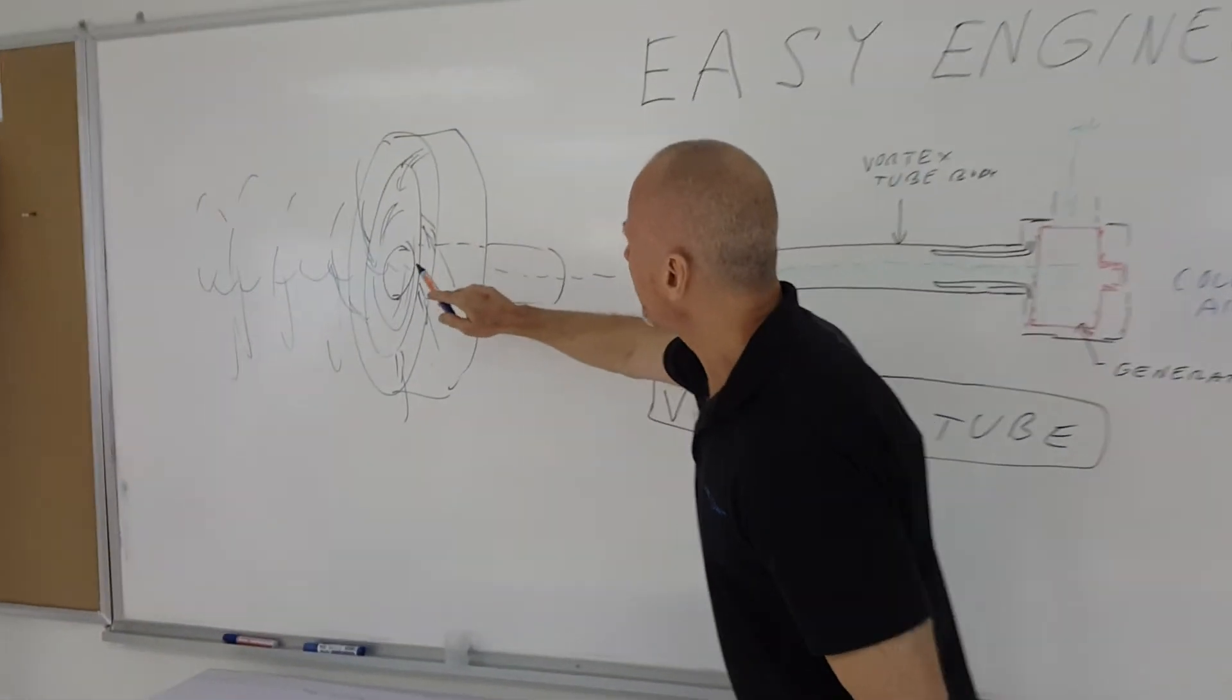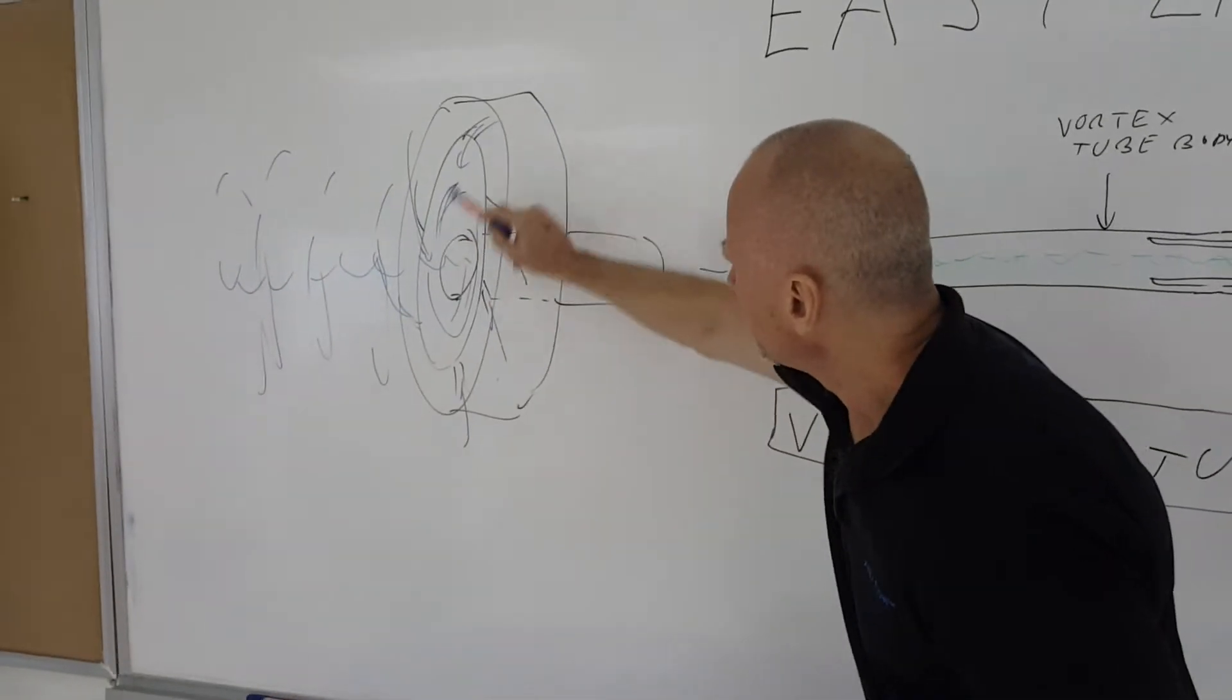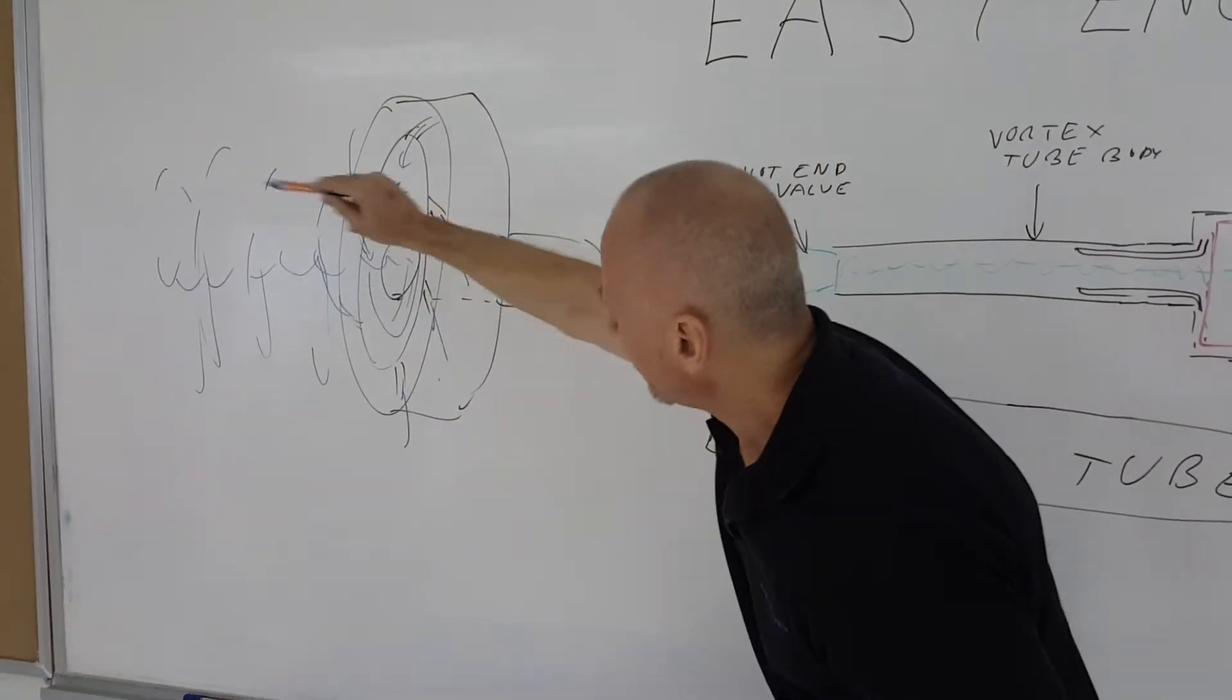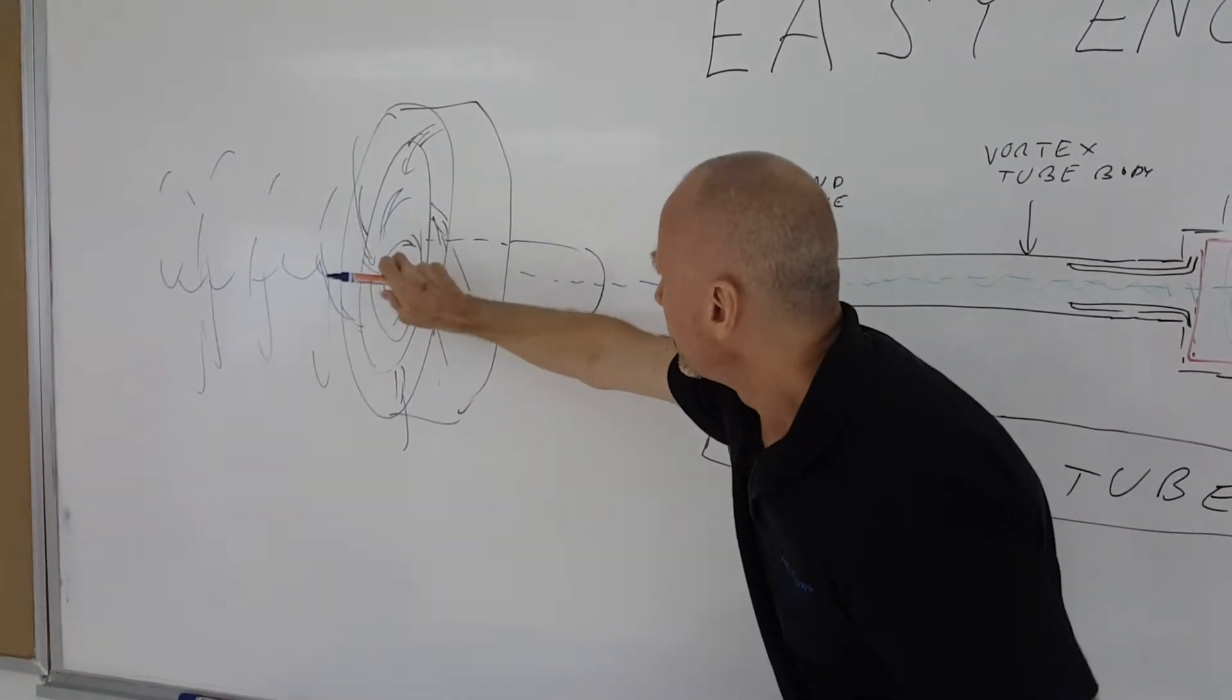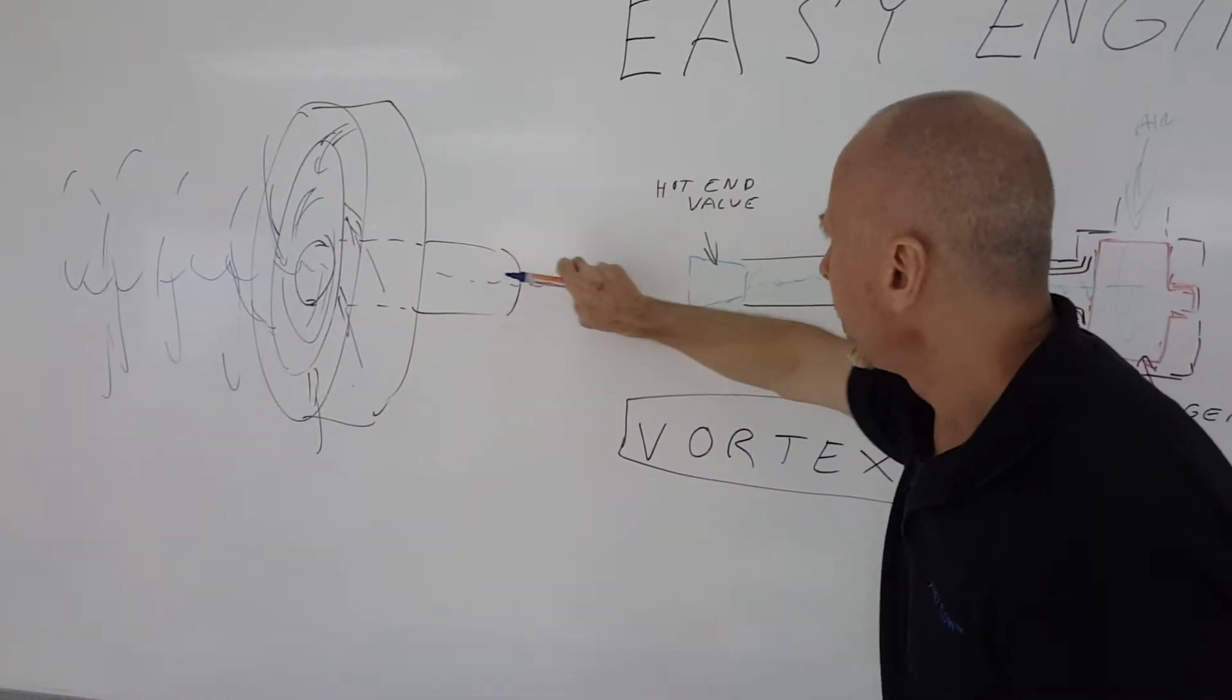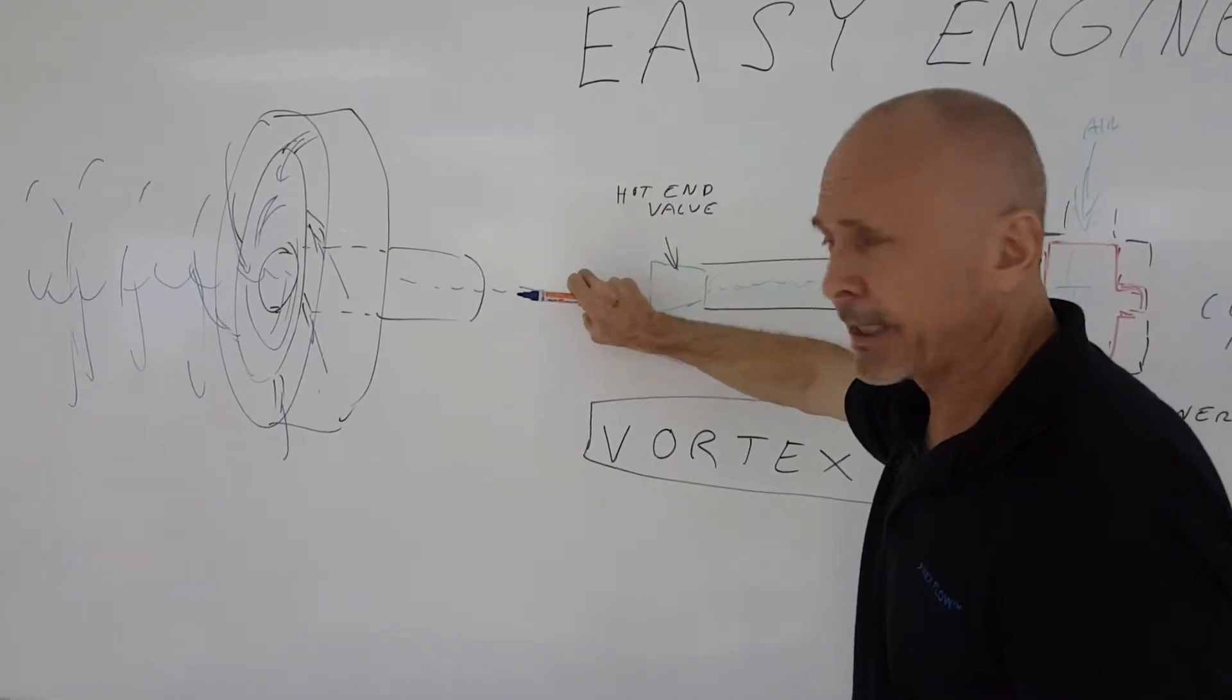A little bit of a close-up on the generator. The air comes in, spins one way, spins back inside itself, and there's a hole in the generator to let that cooling air come out the cold end. That's what basically happens at the generator.